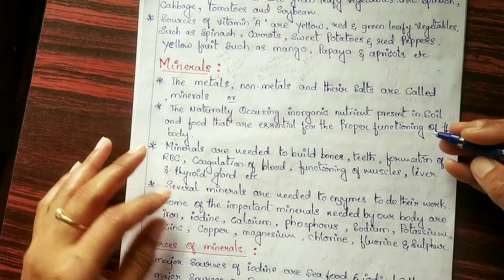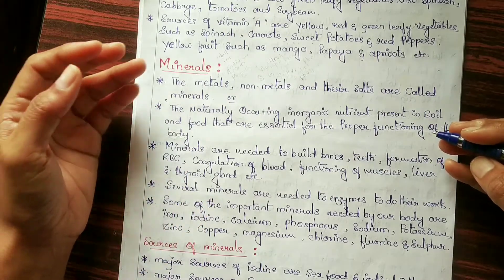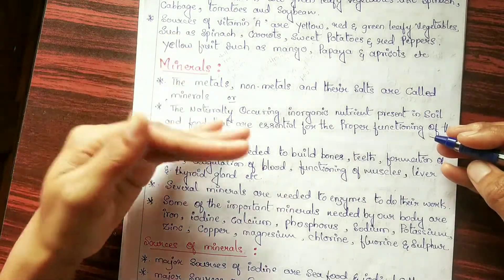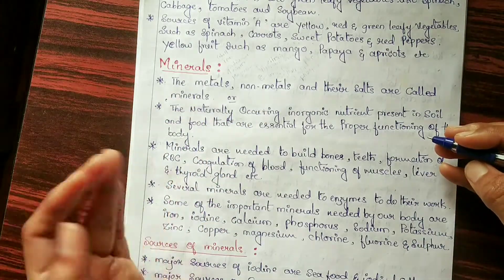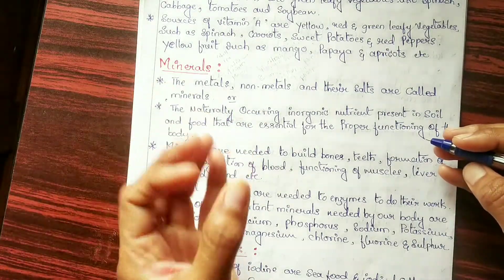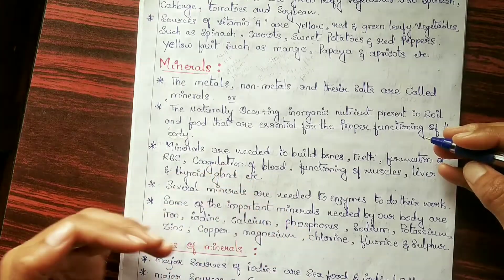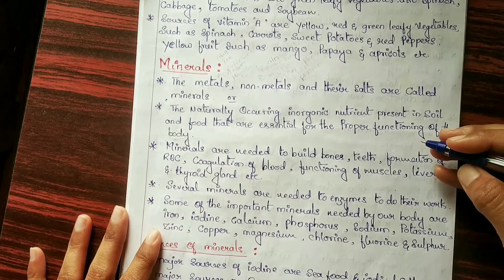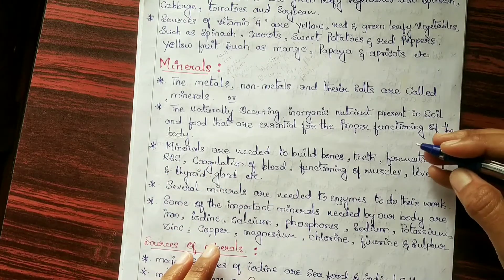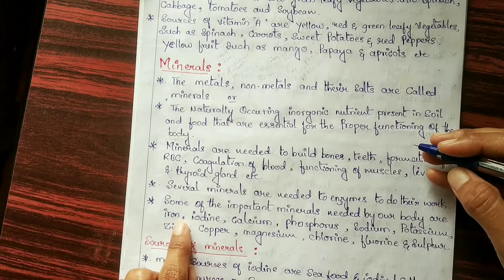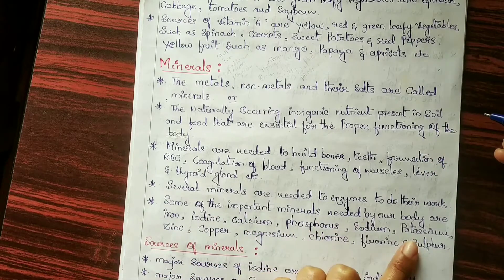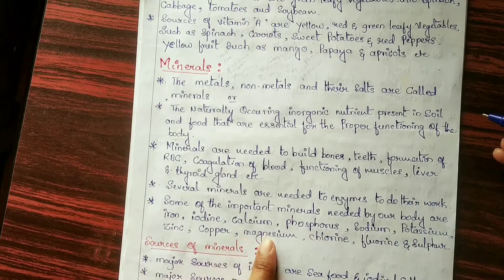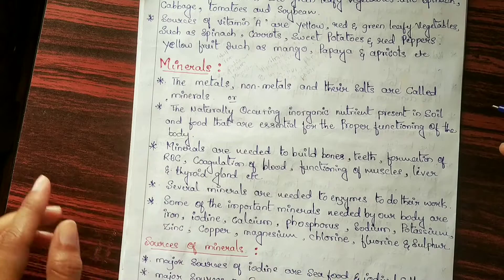Minerals are needed by enzymes to do their work — they act as co-factors to catalyze or enhance the function of enzymes. Some of the important minerals needed by our body are iron, iodine, calcium, phosphorus, sodium, potassium, zinc, copper, magnesium, chlorine, fluoride and sulfur.